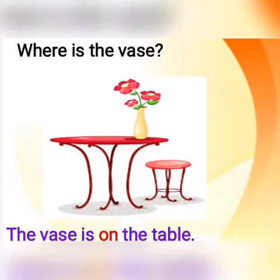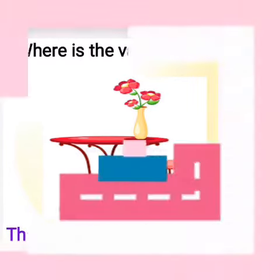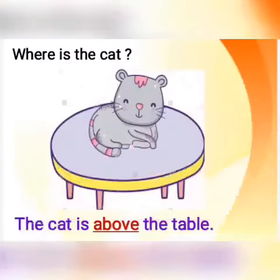Where is the vase? The vase is on the table. Where is the cat? The cat is above the table.